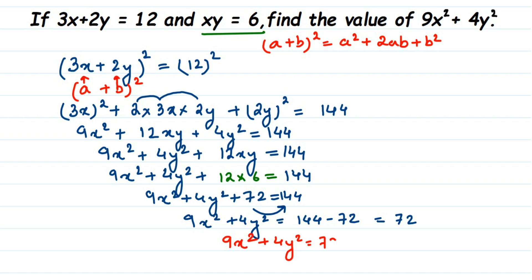I hope this question is clear. We simply squared both sides of the equation, applied the identity, substituted the value of xy, and got the answer. If you have any other questions or doubts, you can drop a comment. Thank you so much for watching.